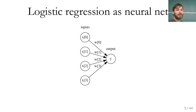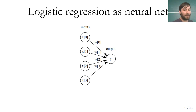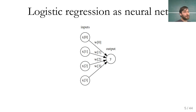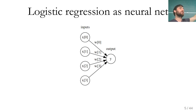Each arrow corresponds to a single weight, and each node corresponds to a single variable — input, output, or intermediate result. An important distinction: earlier I drew something similar for graphical models like latent Dirichlet allocation or mixture models, where nodes correspond to random variables in a formal probabilistic framework. Here the nodes don't correspond to random variables — these circles and arrows mean something completely different and much simpler.